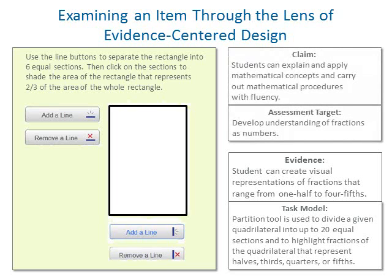The evidence is intended to support a claim that a student can explain and apply mathematical concepts and carry out mathematical procedures with fluency to demonstrate an understanding of fractions as numbers. Given the alignment between the claim, the assessment target, the evidence required, the task model, and the item, it can be said that this item is designed appropriately to collect evidence that will support the intended claim. For students who accurately partition the quadrilateral into six parts and highlight four sections, the item provides evidence supporting the claim. For students who produce an inaccurate response, the item provides evidence supporting a claim that the student has not yet developed full understanding of fractions.